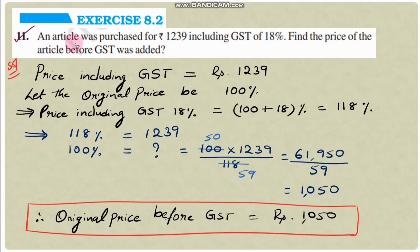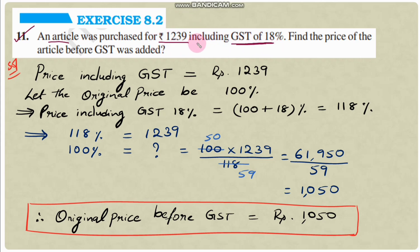Question number 11: An article was purchased for ₹1239 including GST of 18%. Find the price of the article before GST was added. This question is similar to question 10. The article was purchased for ₹1239, and this ₹1239 includes 18% GST. We need to find the original price before GST was added.